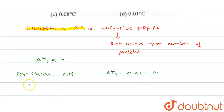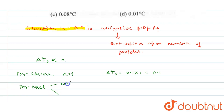Now we will talk about the number of particles for NaCl. When we have NaCl, it dissociates. NaCl → Na⁺ + Cl⁻. So the total ions are 2 ions.